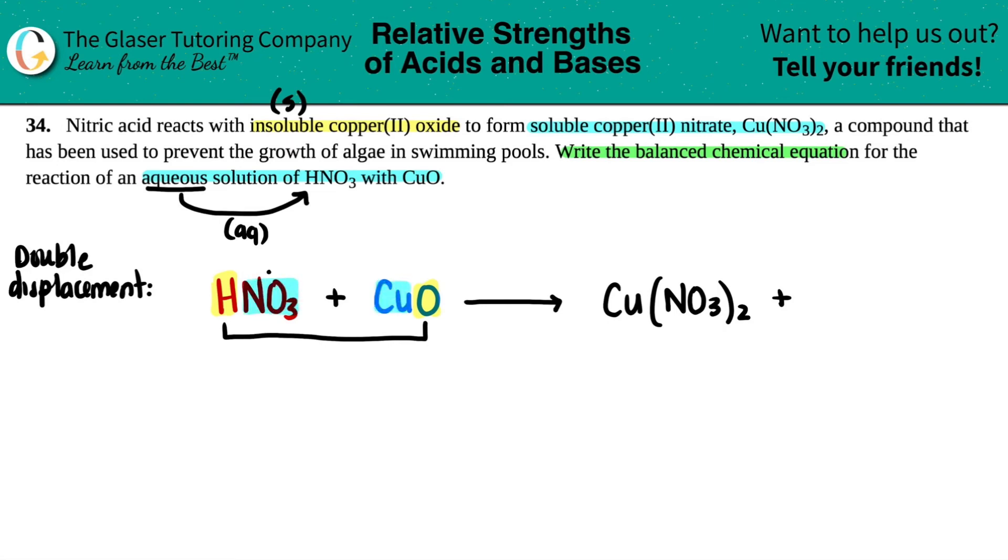And remember, with double displacements, outers go with outers as your compound in the products. And inners go with inners. So they helped us out here. They gave us the compound for the inner one, right? Cu coming with NO3, Cu(NO3)2. So all we have to do is just find out what the outer compound is. Well, it's a hydrogen coming together with an oxygen. H is in group one. Remember, we need to get those charges. So that's a plus one. Oxygen, negative two, right?